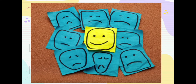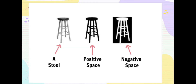When you hear the words positive and negative, you might describe those words as one meaning good and one meaning bad, but in art positive and negative space refers to the area of an artwork. Let's take this picture of a stool. In art, the stool is the subject — it's the main object in the picture, what the artist wants you to look at. So we describe the stool as the positive space, and anything around the stool is the negative space — basically the background.